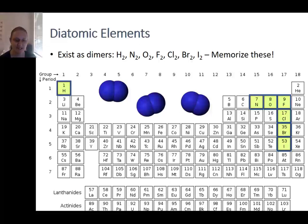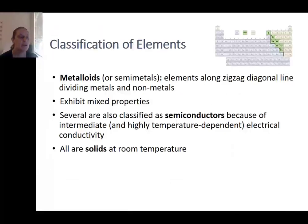Metalloids are the remaining elements that occur on this diagonal, and they have properties that are somewhere between metals and non-metals. They often have properties that are temperature or pressure dependent, and all of them are solids at room temperature.